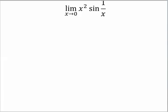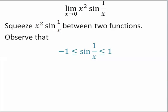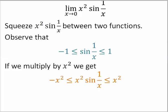Let's use that to find this limit. We need to squeeze x squared sine of 1 over x between two functions. We observe that sine is always between negative 1 and 1. We multiply by x squared.